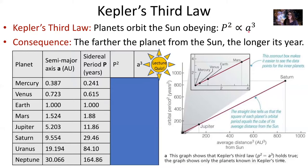If something is cubed, you take that number times itself three times. The consequence is that the further a planet is away from the sun — that's its semi-major axis — the longer its orbital period, that's P. So if A increases, P increases too.